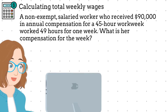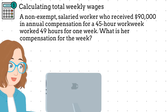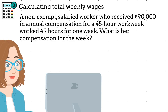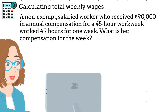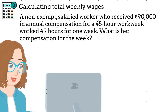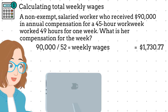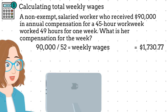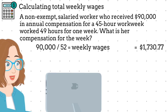We are going to continue with this example where a salaried non-exempt worker has annual compensation of $90,000 for a 45-hour workweek. We need to calculate the weekly wages for this employee when the employee worked 49 hours for the entire week, or 4 hours more than the regular workweek. We first calculate the regular weekly wages by dividing $90,000 by 52 weeks per year. That is $1,730.77.